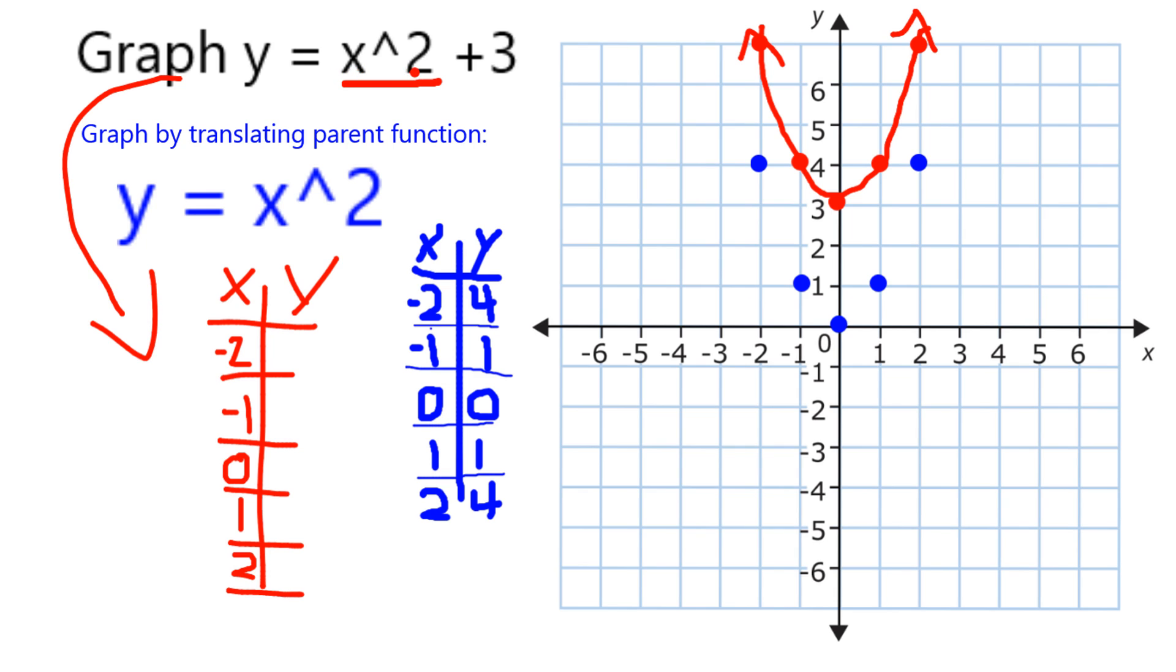So for example, negative 2 squared is going to be 4, and 4 plus 3 is equal to 7, which is as I expected and as I got in my graph.